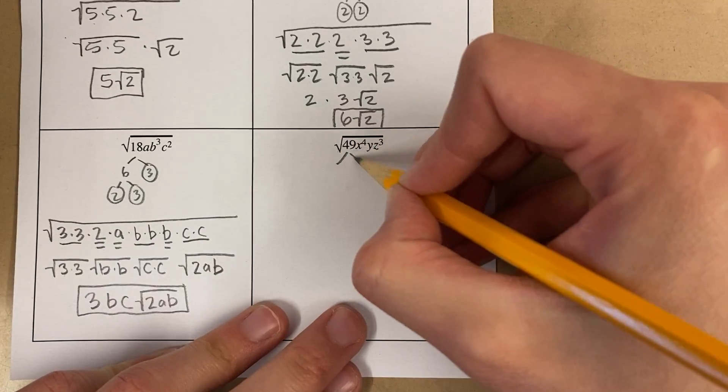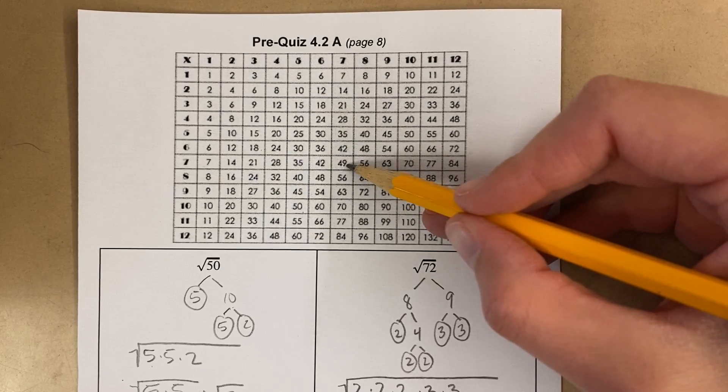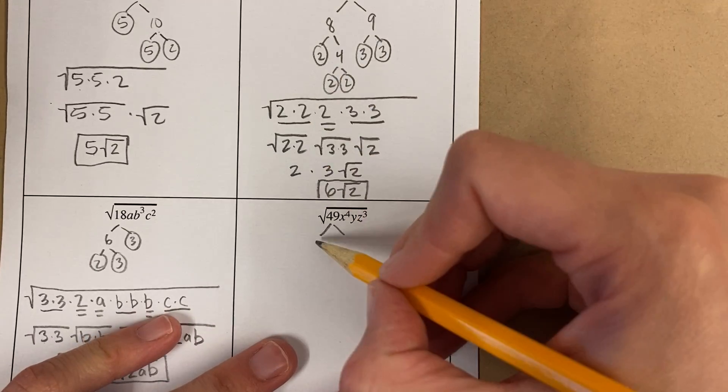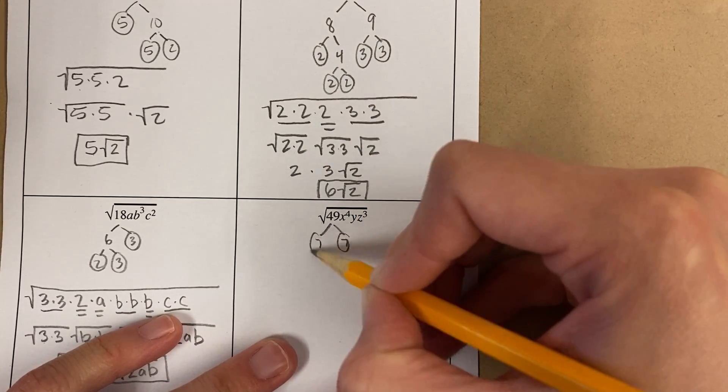Over here. I see 49 and I think, oh, 49. Oh yeah, 7 times 7 is 49. And it turns out, 7 is prime. So, I'm done there.